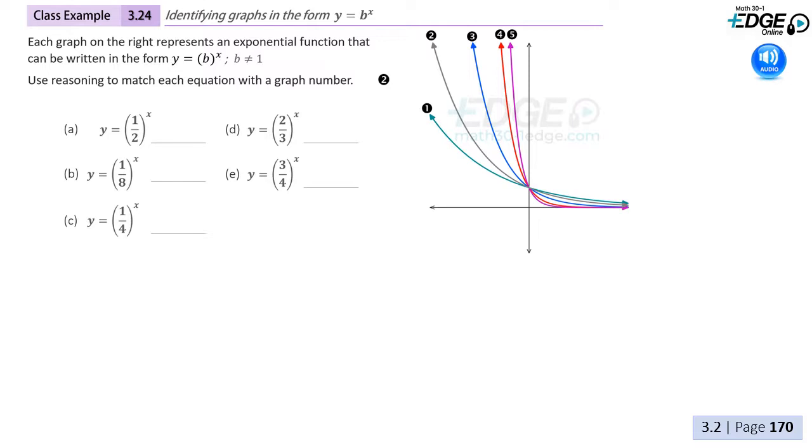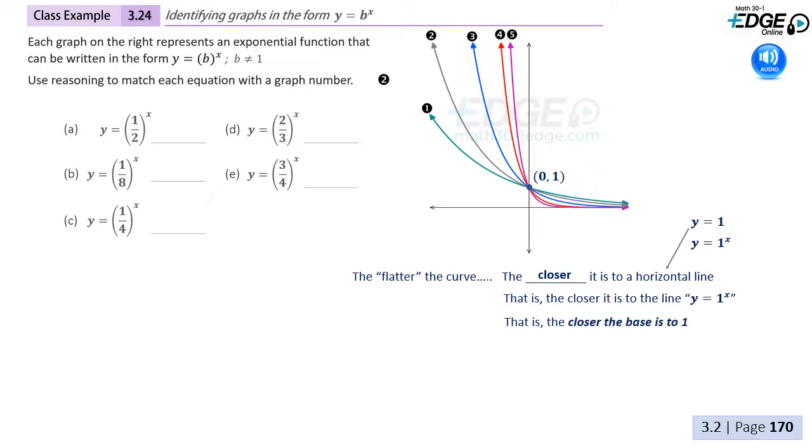Let's talk about how these base values compare to a base of 1, which is not in fact an exponential function. Consider for a moment if we could have a base of 1 and write the equation y equals 1 to the x. This would appear as a horizontal line with a height of 1. Now consider the five graphs given. Which of these is most like this flat line? The answer is graph 1. It is the flattest, and most like y equals 1 to the x.